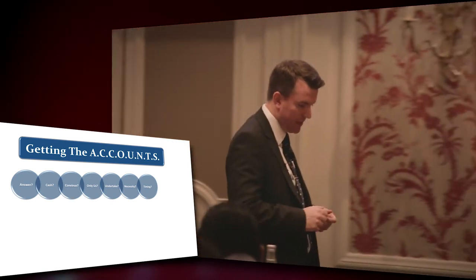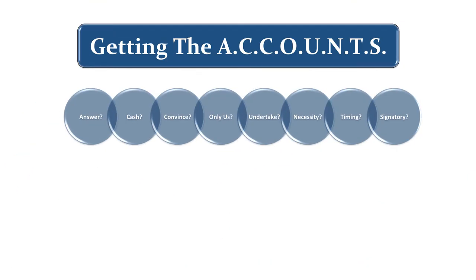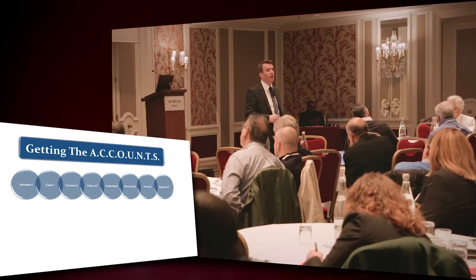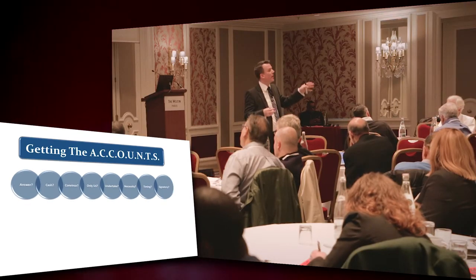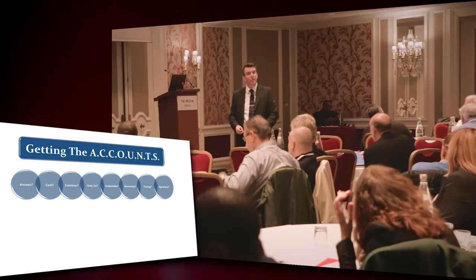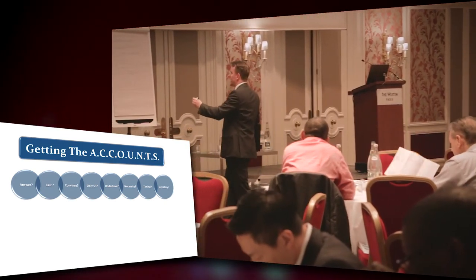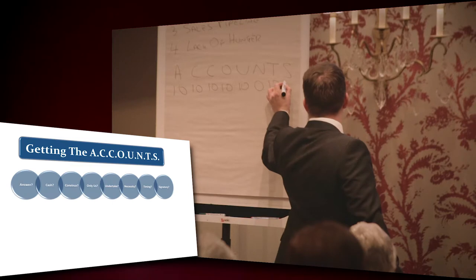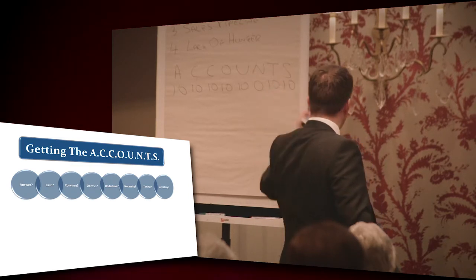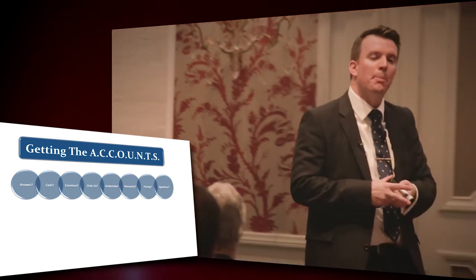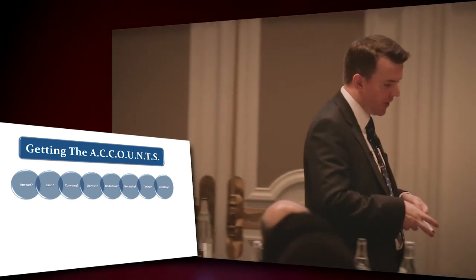And finally, S is for Signatory — meaning in some businesses, although we have the decision makers in front of us, by some quirk of their articles of association, the signatory is somewhere else. Not that they have a decision to make or can influence it — it's just their autograph that we need. So if we have the signatory with us in our conversations, score it a 10. If the signatory is somewhere else, score it a zero. This often happens in parent company and subsidiary situations.